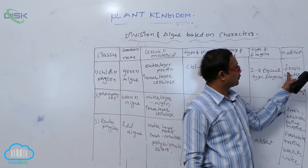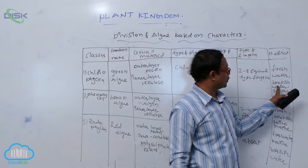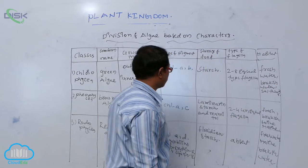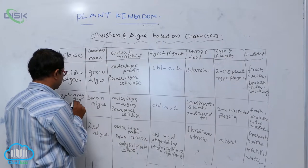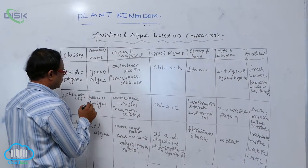It survives in freshwater, brackish water, and saltwater. Next is Phaeophyceae, which means brown algae.